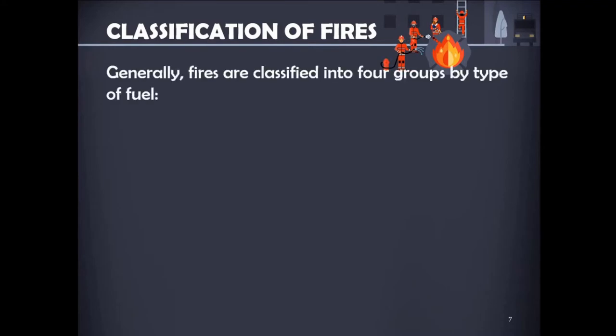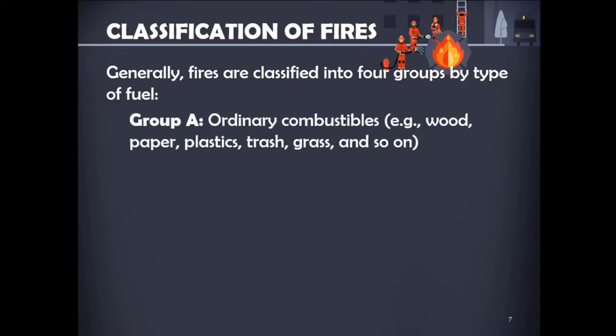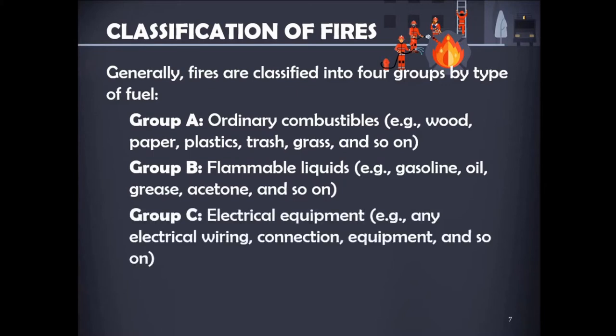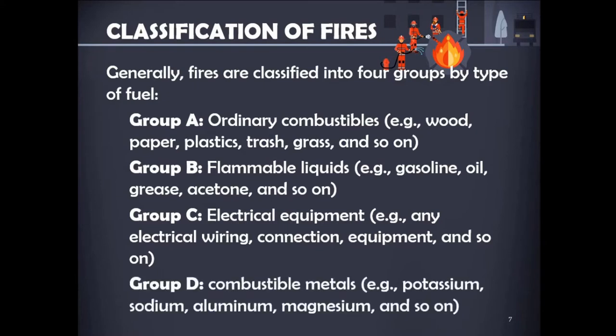Classifications of fire: Generally, fires are classified into four groups by type of fuel. Group A: ordinary combustibles such as wood, paper, plastics, trash, and grass. Group B: flammable liquids such as gasoline, oil, grease, and acetone. Group C: electrical equipment such as any electrical wiring, connections, and equipment. Group D: combustible metals such as potassium, sodium, aluminum, and magnesium.